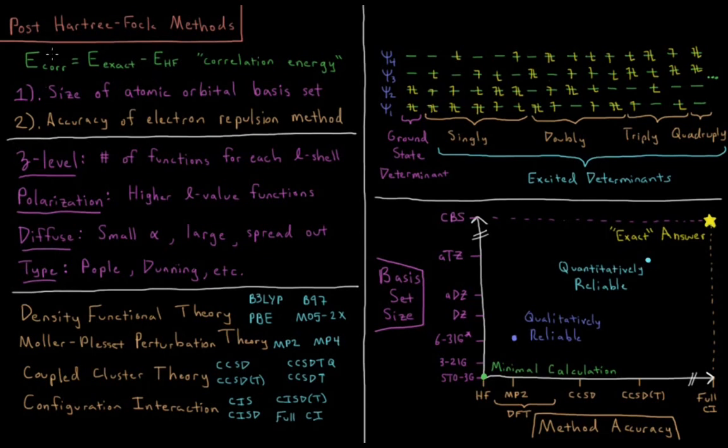So to start off, we'll define the correlation energy. The correlation energy of an atom or a molecule equals the exact quantum mechanical energy of it minus the Hartree-Fock energy of the atom. So correlation is the difference between the exact energy and the Hartree-Fock energy.